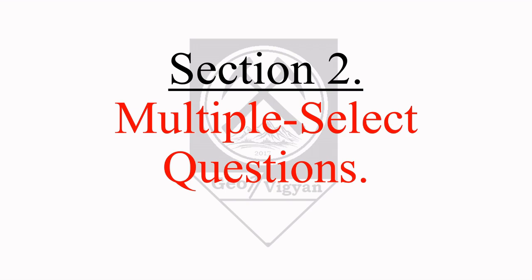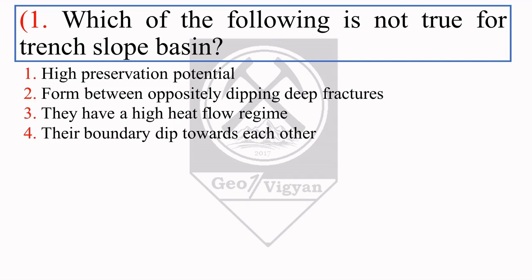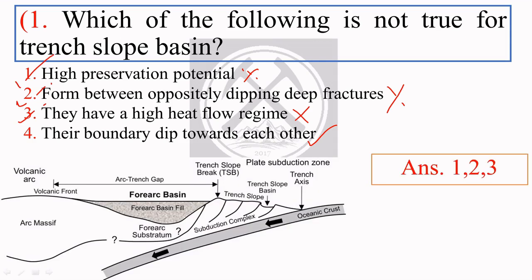The next section is multiple select questions. The first question: which of the following is NOT true for a tench slope basin? First — high preservation potential: the tench slope basin is a highly tectonically active area, so preservation potential is very low — this is wrong. Second — formed between oppositely dipping fractures: also wrong. Third — high heat flow: also wrong. Fourth — boundary dips towards each other: this is right. So options 1, 2, and 3 are not true, making the answer 1, 2, 3.